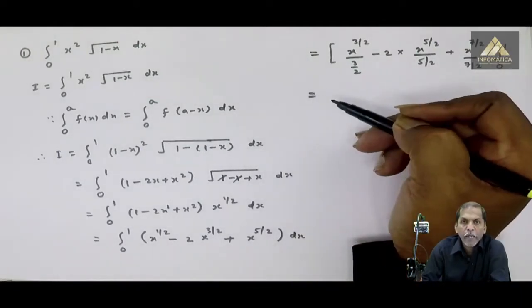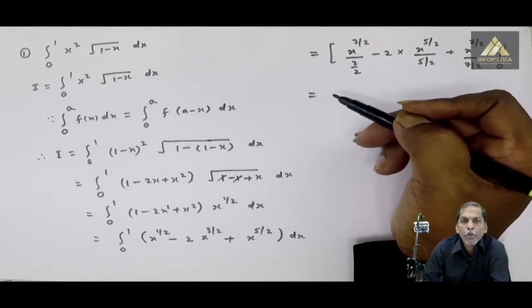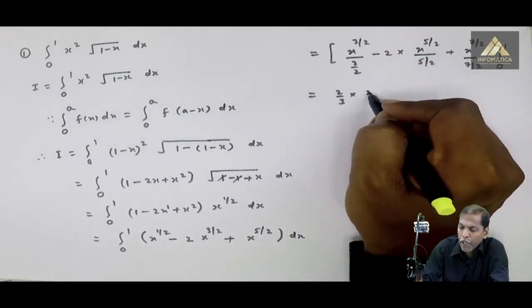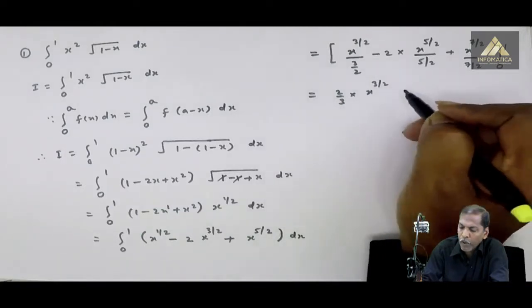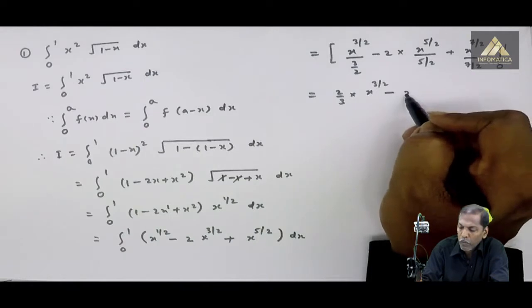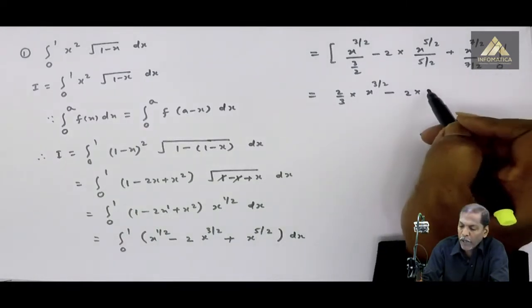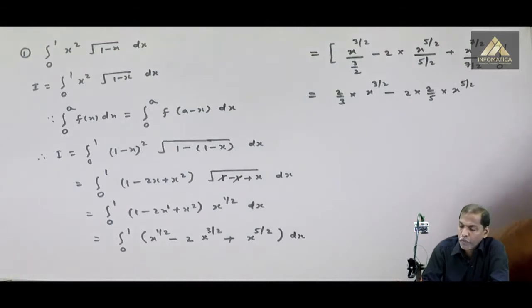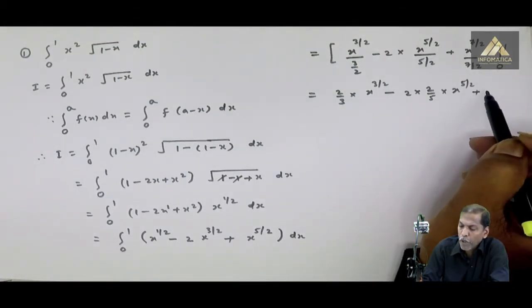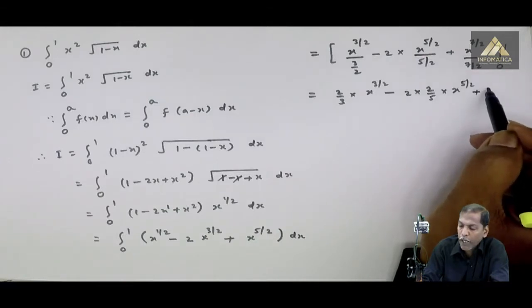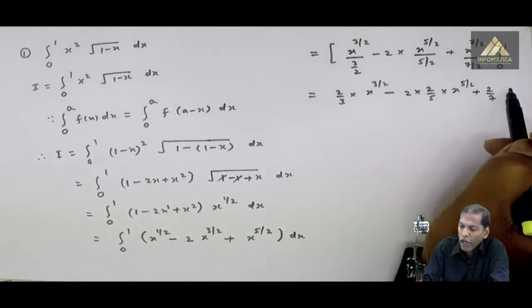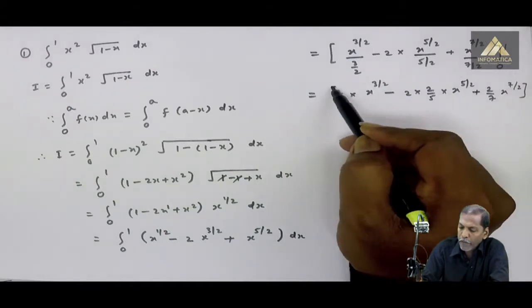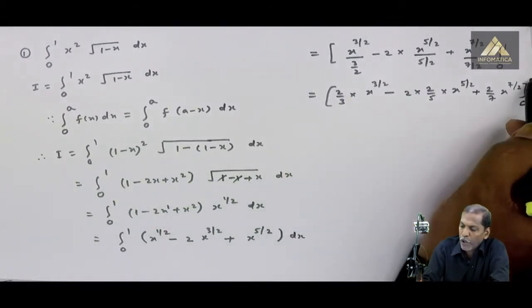Uske baad jo division mein term hai, denominator ko haam numerator mein lete hai. So 3 by 2 becomes 2 by 3 into x raise 3 by 2. Then minus 2 into 2 by 5 into x raise 5 by 2, that is minus 4 by 5. Uske baad plus 2 by 7 into x raise 7 by 2. Bracket complete with limits 0 to 1.